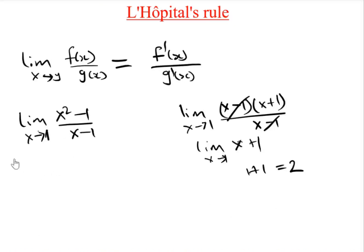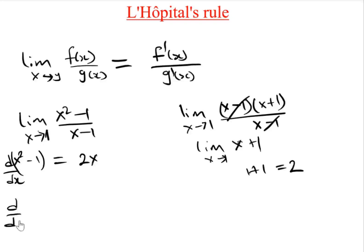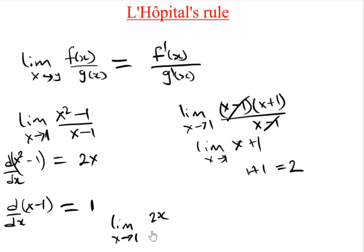Now, L'Hôpital's rule says we can differentiate both the numerator and denominator. The differentiation of (x² - 1) gives 2x, and the differentiation of (x - 1) gives 1. So the limit as x tends to 1 of 2x divided by 1 equals, plugging in 1: 2 × 1 ÷ 1 = 2. You see — the answers are all the same.